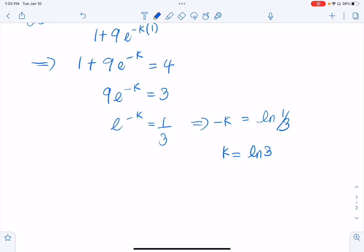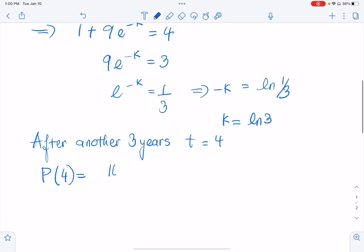So after another 3 years, T should be 4. So now let's plug it in. So P of 4 is 10,000 over 1 plus 9e to the negative K, which is ln 3. And T in this case is 4.